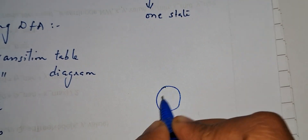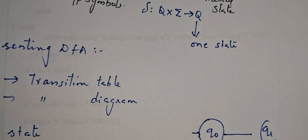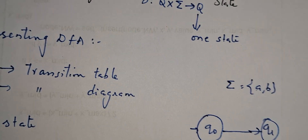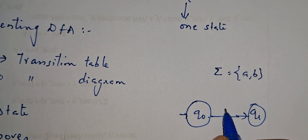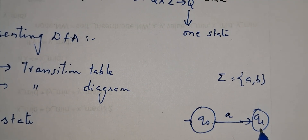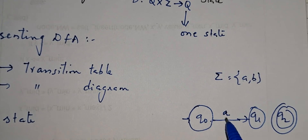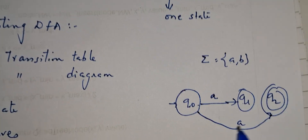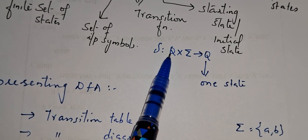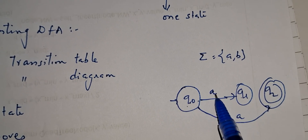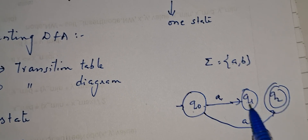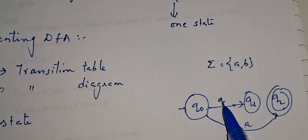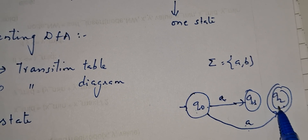Suppose this is state Q0 and I need to go to Q1, and our input alphabet is {a, b}. So Q0 on 'a' goes to Q1. Now suppose one more state Q2 is here, and I write Q0 on 'a' also goes to Q2. That is not allowed in DFA. A state on a particular input symbol goes to only one state. Here, from Q0 on the same symbol 'a', it is going to both Q1 and Q2 — but this is not a DFA.